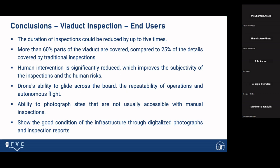From the experiments, they realized that the duration of inspection could be reduced by up to five times. More than 60% of the viaduct is covered, compared to 25% covered by traditional inspections. Human intervention is significantly reduced, which improves the objectivity of the inspection and reduces human risk. The drone has the ability to fly across the structure with repeatability of operation and autonomous flight, and the ability to photograph sites that are not usually accessible to humans. All infrastructure conditions are digitalized through photographs and inspection reports. They also realized they can take images, mark a location, come back to that same place, and repeat the inspection, showing end users the results. The operator can say what is a defect and what is not, and then train again and obtain new results.